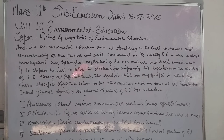The fourth objective is skills. Environmental education aims at providing skills to the learner to prevent and control environmental problems and also to identify the causes and effects of persisting problems.